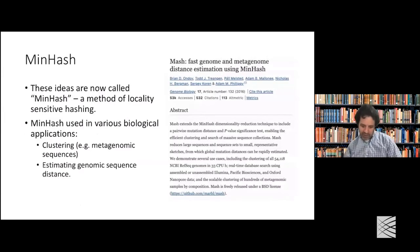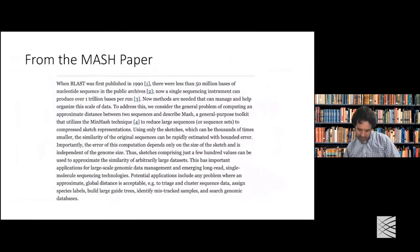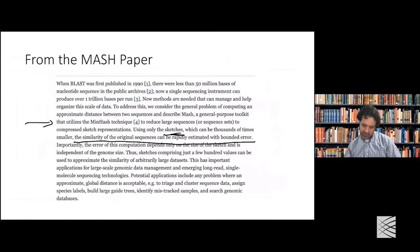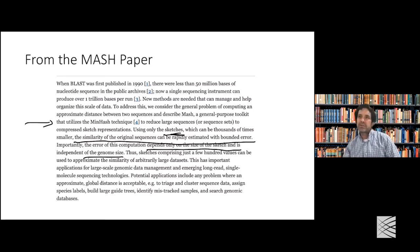Returning briefly to the MinHash paper: minhash is used in various biological applications. From the MASH paper we looked at earlier, the abstract is pretty clear — they use the MinHash technique with sketches. The similarity can be rapidly estimated with bounded error, and the error depends only on the size of the sketch, not the genome size. So taking 100 permutations, regardless of how long the documents or genomes are, we can estimate the resemblance.